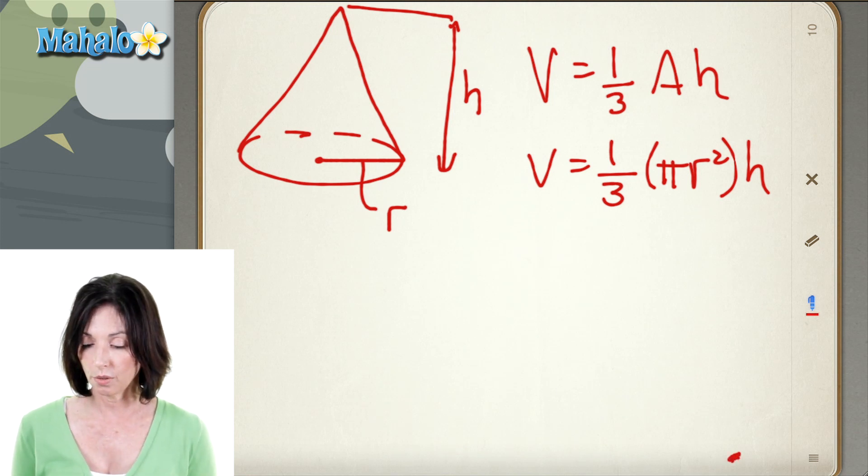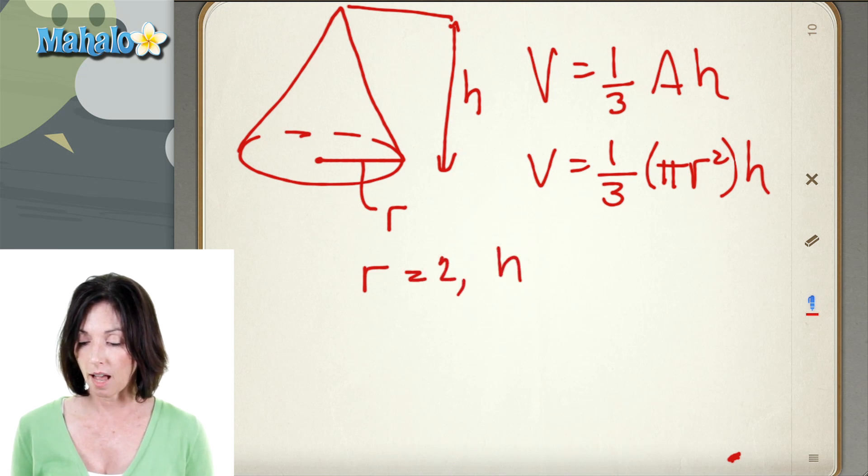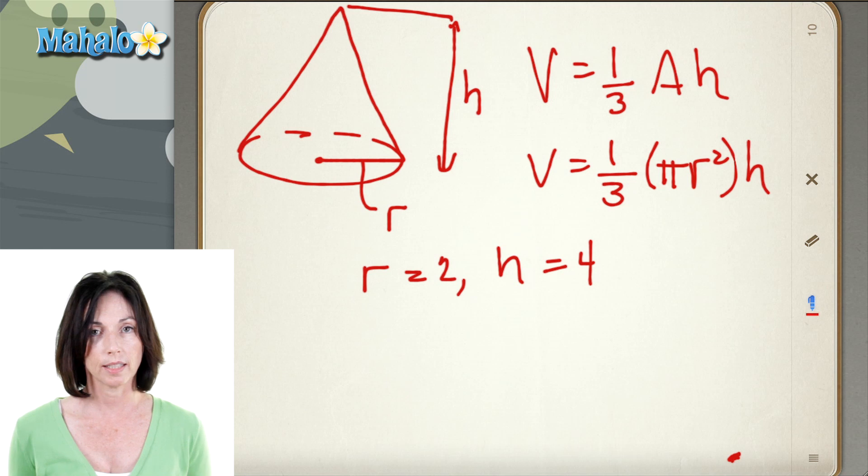So let's say our cone has a radius of 2 and a height of 4. Let's calculate the volume.